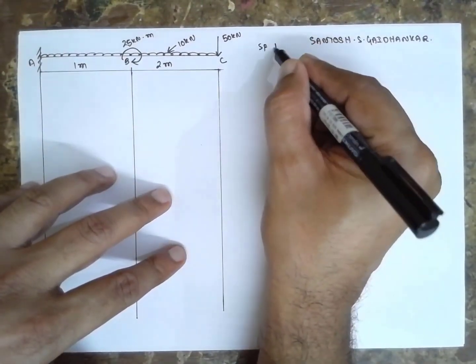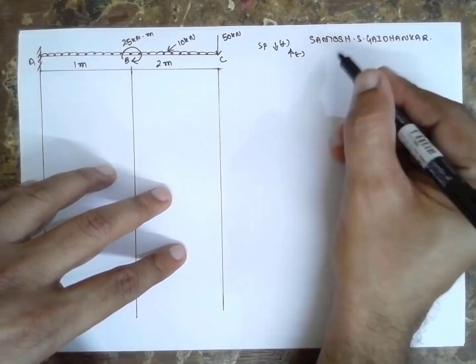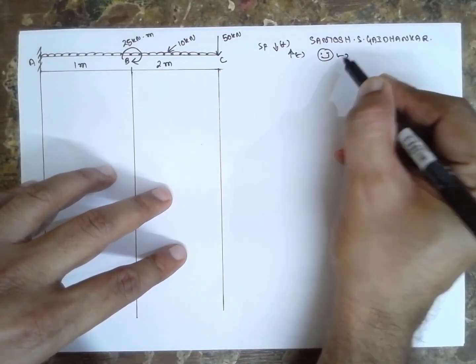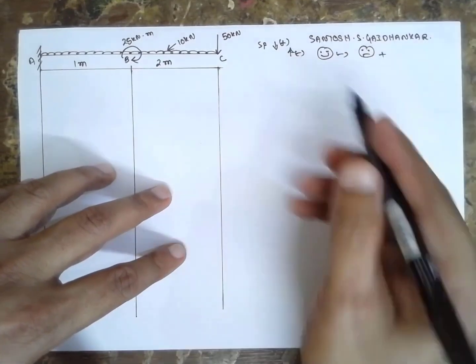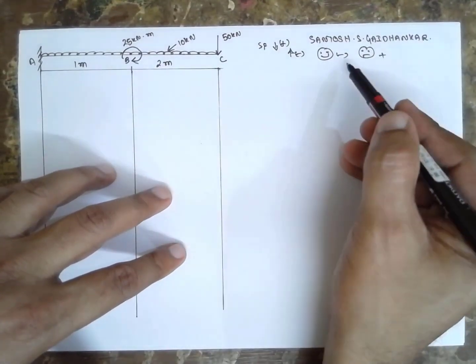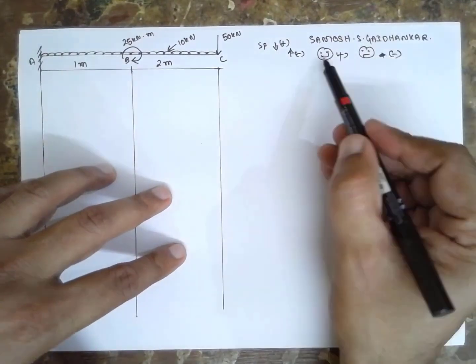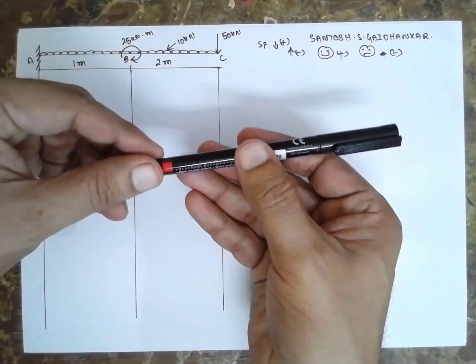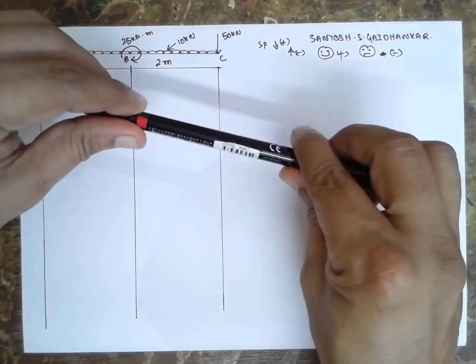For shear force, downward I will consider as positive and upward as negative. For bending moment, sad face is negative and smiling face is positive. For sagging I will consider as positive, and for hogging I will consider as negative.